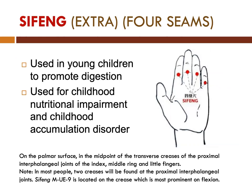For the last point, this is an extra point called Sifong, or MUE9. It is used in children to promote digestion, for childhood nutritional impairment and childhood accumulation disorder. These points are located on the palmar surface at the midpoint of the transverse creases of the proximal interphalangeal joints of the index, middle, ring, and little fingers. In most people, two creases will be found at the proximal interphalangeal joints. Sifong is located on the crease which is most prominent on flexion.